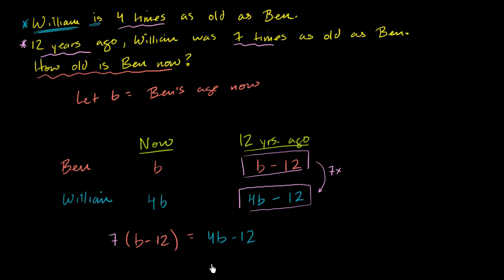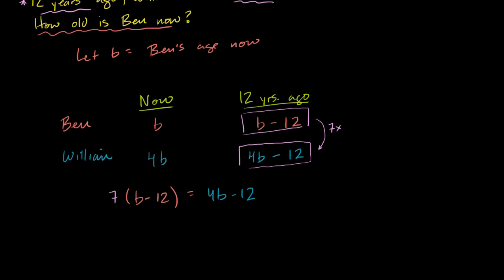And it seems like we've done the hard part. We've set up the equation. Now we just use a little bit of our algebraic tools to solve for b. So let's do that. So the first thing we might want to do, we can distribute the seven.